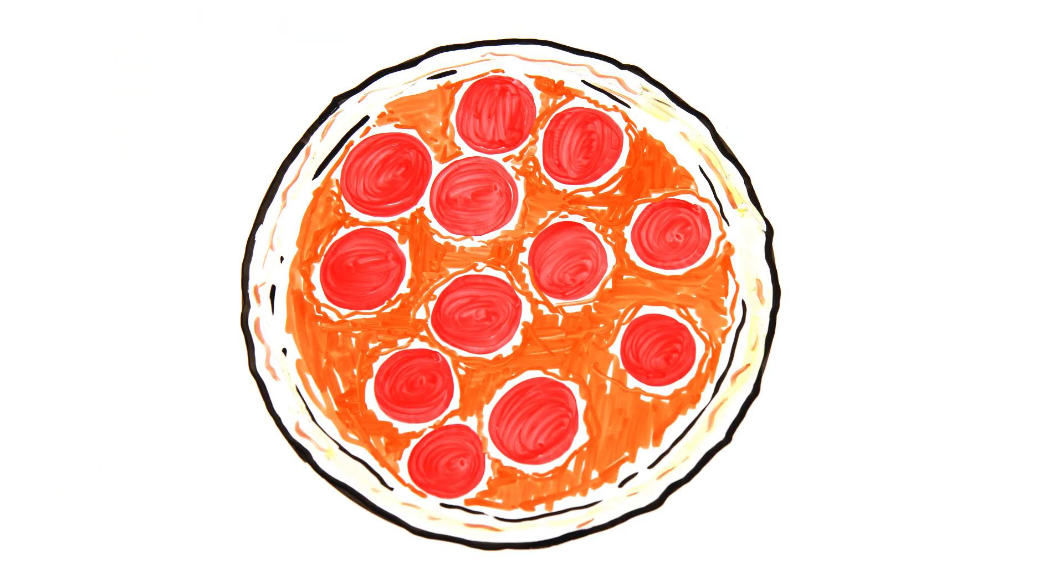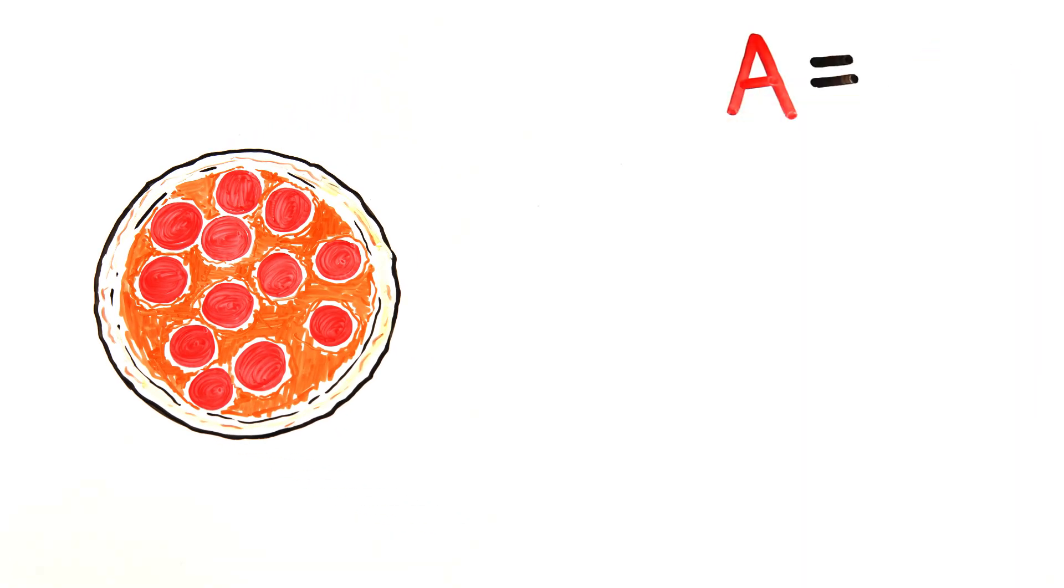It all comes down to the area of a circle, that equation you may have heard of when you were young, where the area is equal to pi r squared, r being the radius.